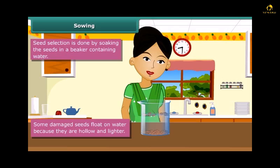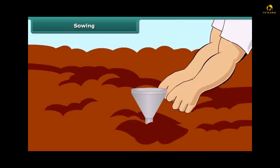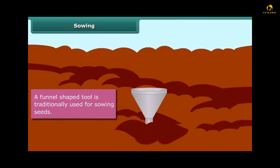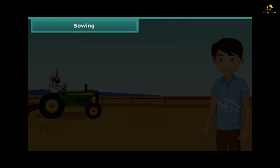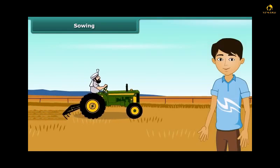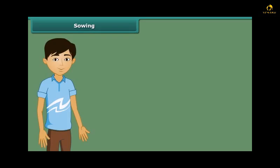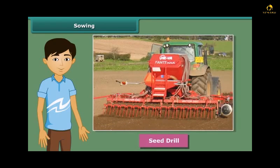Now let us see the tools used for sowing seeds. This farmer has a funnel-shaped tool — he fills seeds into the funnel and passes them down through the sharp ends of a pipe to get them seeded in the soil. This is a traditional method and very easy. Nowadays, farmers use modern seed drills for sowing with the help of tractors. The seed drill sows seeds uniformly at proper distance and depth, ensuring seeds get covered by soil after sowing, and saves a lot of time and labor.